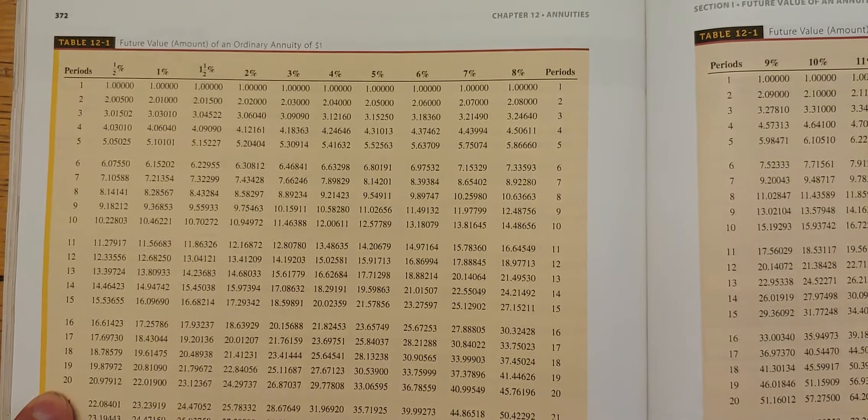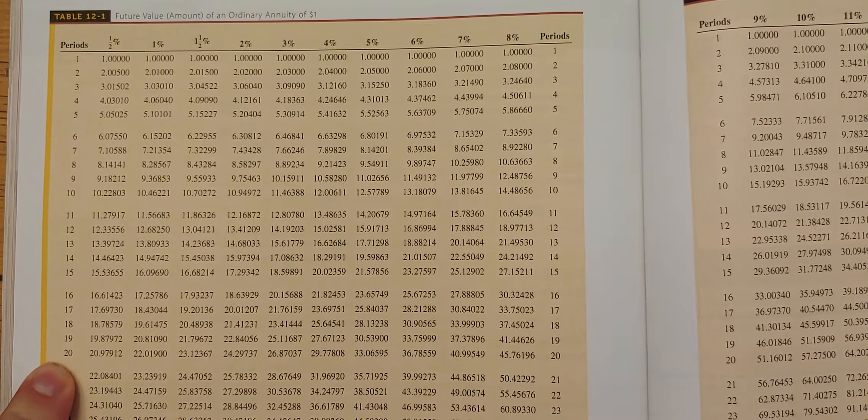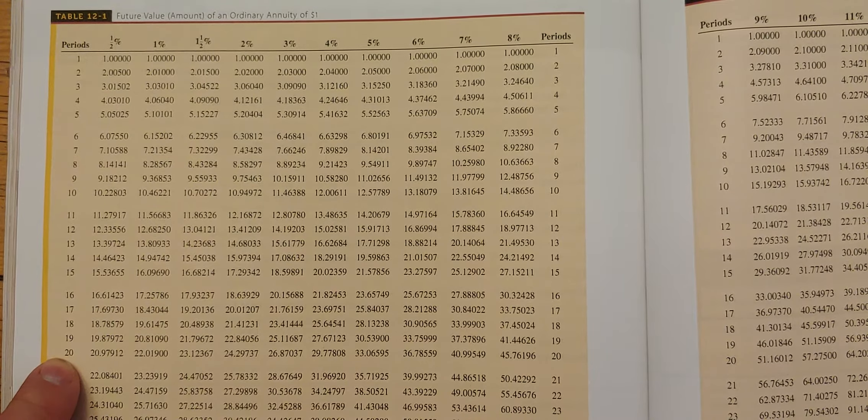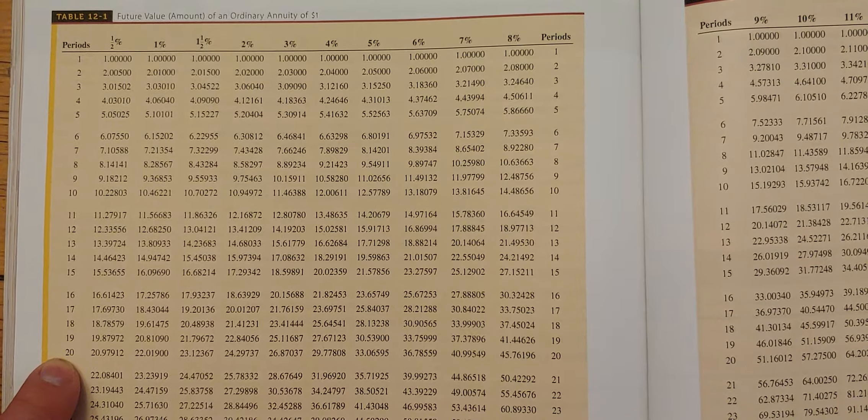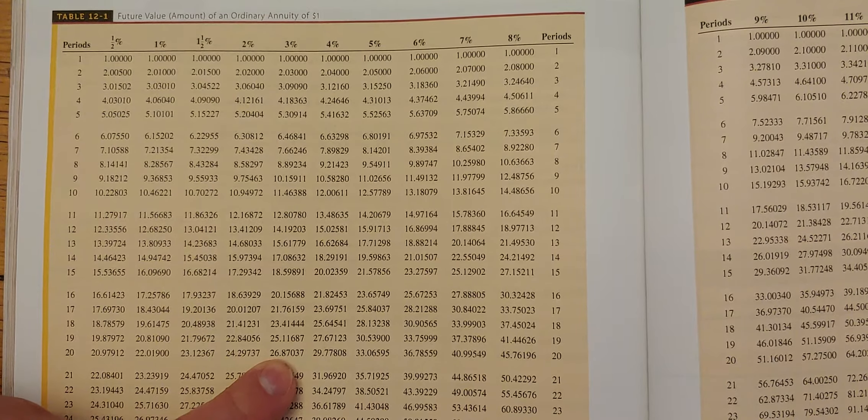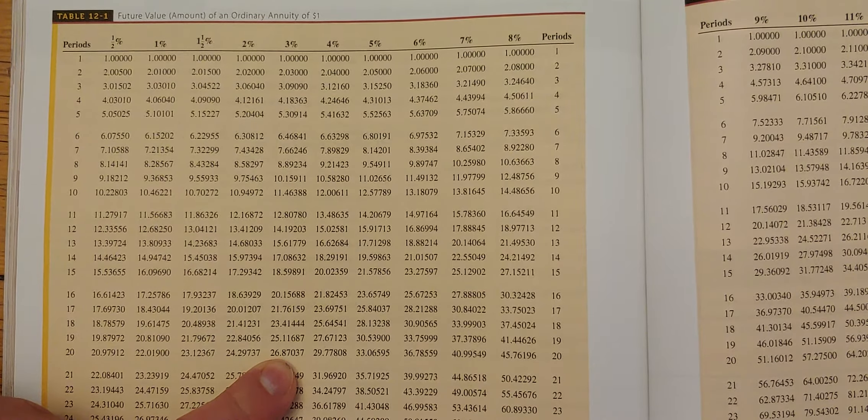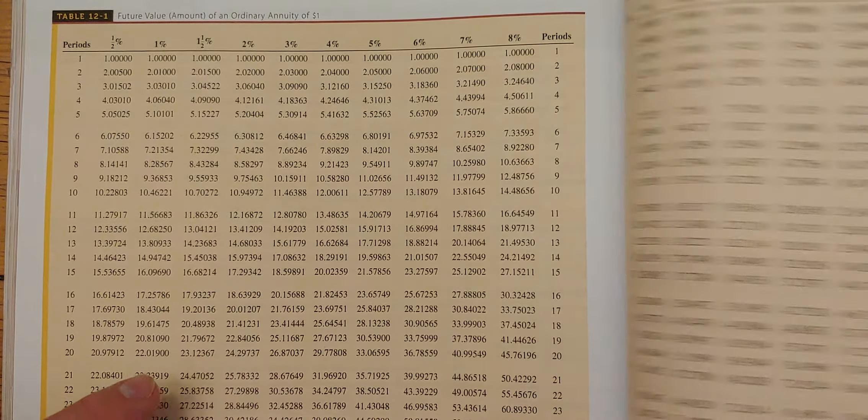Because this is at the end of every period. So 20 is down here. And 3%, it's the 1, 2, 3, 4, 5th column in. 1, 2, 3, 4, 5th column in. So that's 26.87037 is the factor.